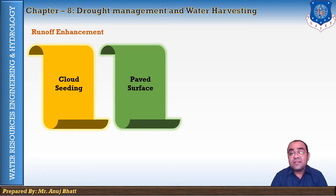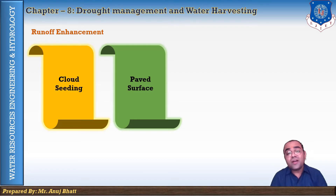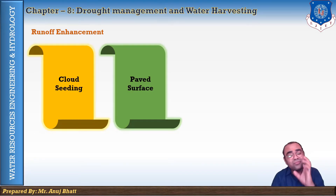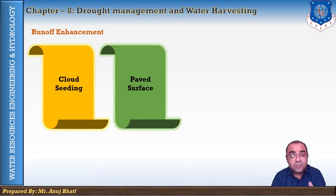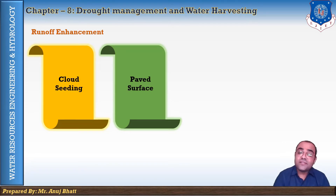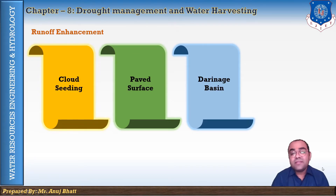Another runoff enhancement method is paved surfaces. Paved surfaces such as cement concrete, asphalt roads, buildings, and footpaths produce greater runoff than bare soil, because bare soil allows some water to be absorbed or infiltrated. Impermeable or partially permeable paved surfaces enhance runoff, leading to greater runoff in urban areas.